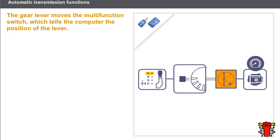Similarly, on some models it may be impossible to remove the key if the lever is not in the Park position. In manual mode, the computer may ignore the driver's use of the upshift or downshift controls to prevent engine speed from being too low or too high.